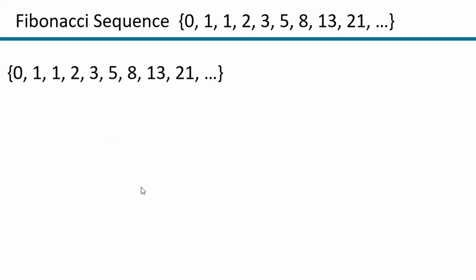In this video, we're going to look at the Fibonacci sequence and talk about matrices and how we could use a matrix to find terms of a Fibonacci sequence. Hopefully you've seen the Fibonacci sequence at some point. It starts off with 0 and 1, and then the next element is the sum of the previous two elements. So 0 plus 1 is 1, 1 plus 1 is 2, 1 plus 2 is 3, 2 plus 3 is 5, and so on.